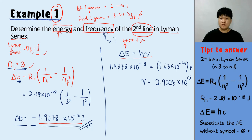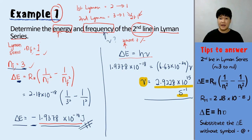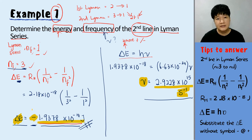Kind reminder: frequency must always be positive — we won't put down the positive symbol, but frequency can never be negative. The unit is S negative 1. For delta E, the positive or negative sign is a must, because it represents whether energy is absorbed or released.